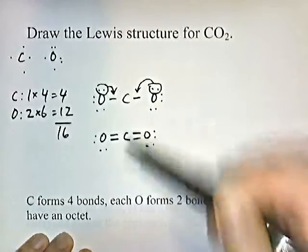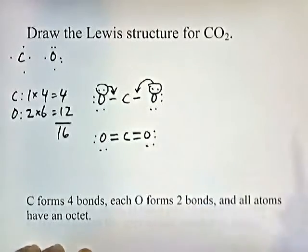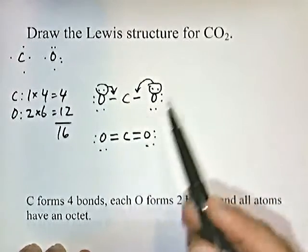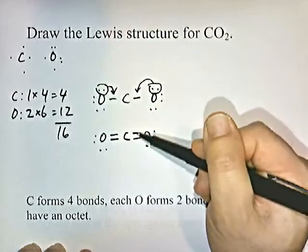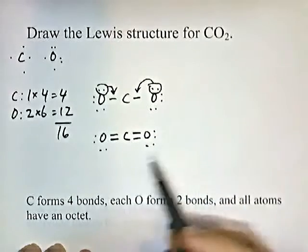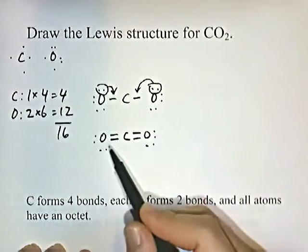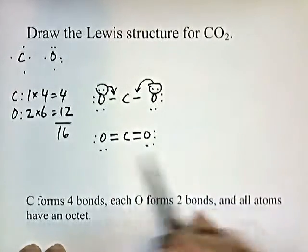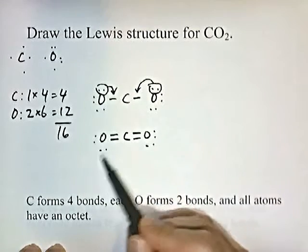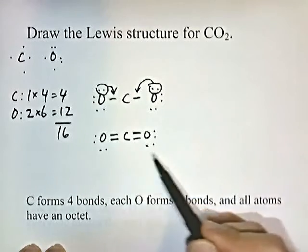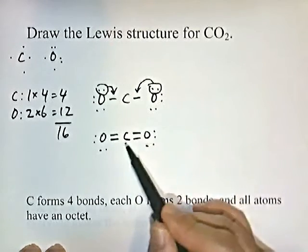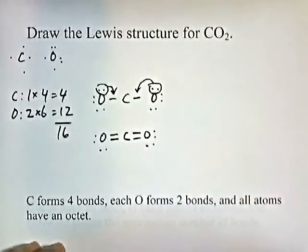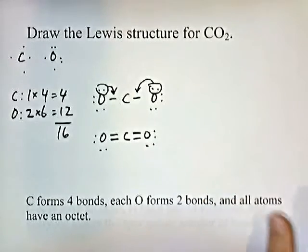Now we can check our work on CO₂. Carbon is forming four bonds — one, two, three, four. Each oxygen is forming two bonds. Each atom has an octet: eight around each oxygen and eight around the carbon. Everybody's happy.